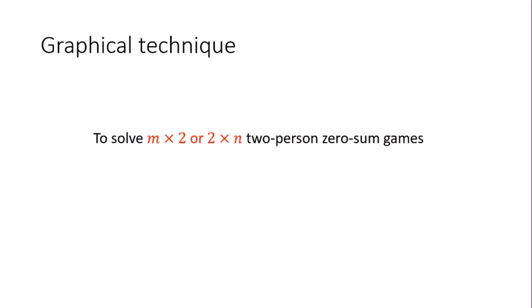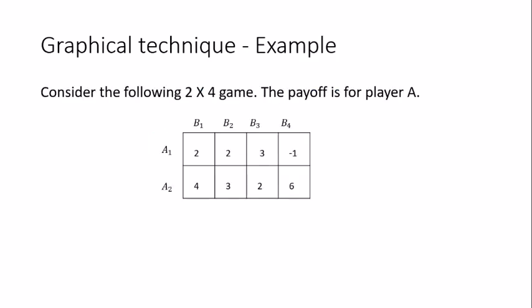The graphical technique has a limitation: it works only for m×2 games (where player B has exactly two strategies) or 2×n games (where player A has exactly two strategies). When either player has exactly two strategies and the other player has any number, the graphical technique is helpful. In all other cases, the linear programming formulation is needed.